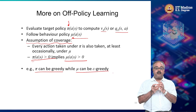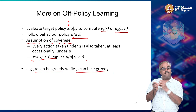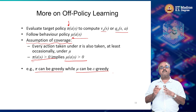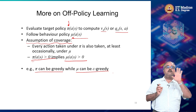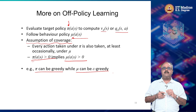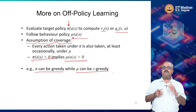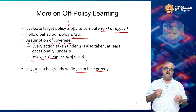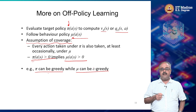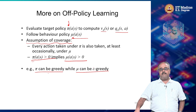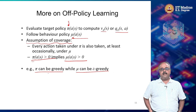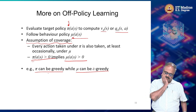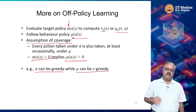Pi can be greedy as long as mu is epsilon-greedy. If it is epsilon-greedy, then every action has a probability of epsilon/n of being taken, including the greedy action. So pi can be greedy while mu can be epsilon-greedy or some other exploratory policy — that is fine. That is the assumption of coverage.